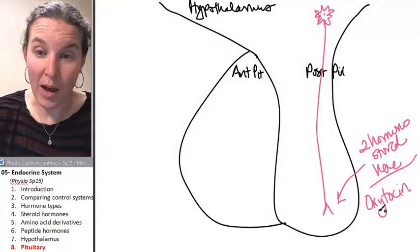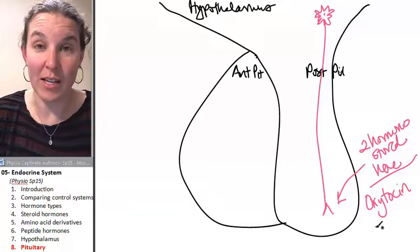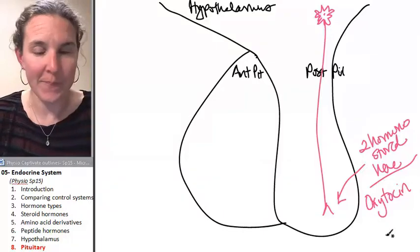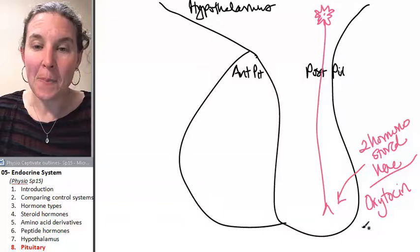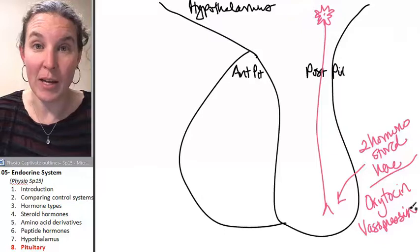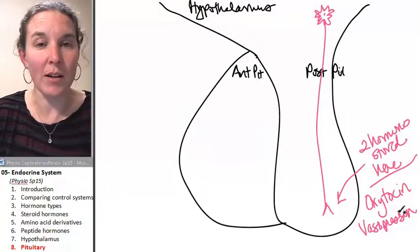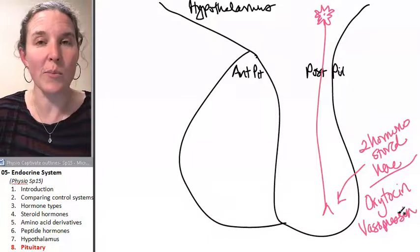That's the one that makes you happy and feel like you're willing to take care of the little parasite you just pushed out of your body. And vasopressin. This is the one that keeps you from peeing the bed at night. Two very important hormones that are in the posterior pituitary.